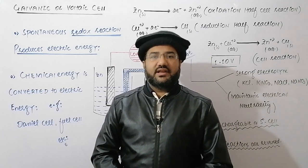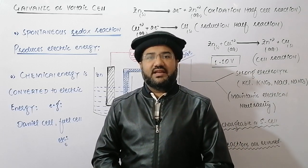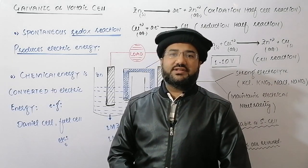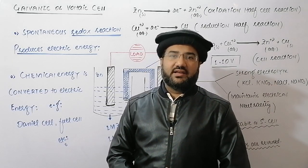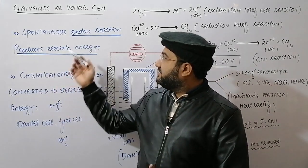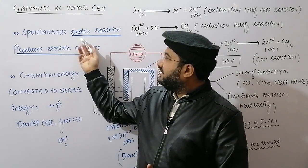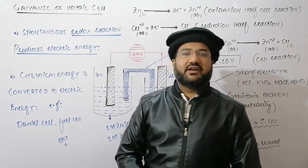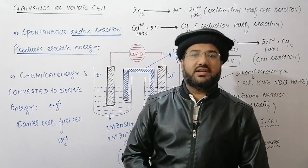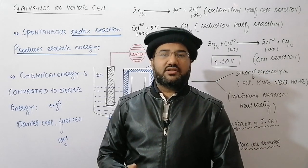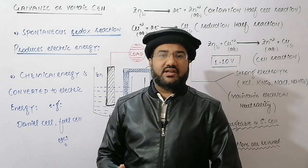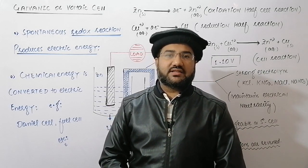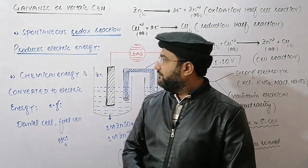It is a redox reaction, which means that it consists of two halves: the oxidation half and the reduction half. The reduction half will take place on the cathode and the oxidation half will take place on the anode, because the cathodic reaction is the reduction reaction and the anodic reaction is the oxidation reaction.